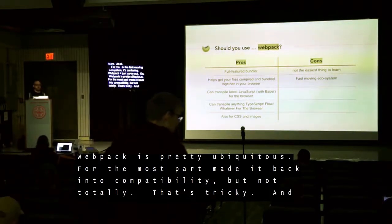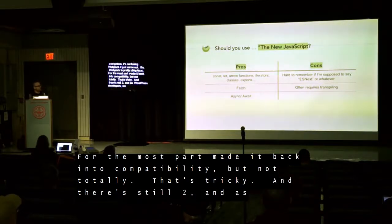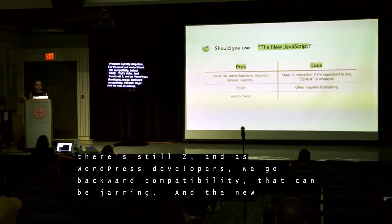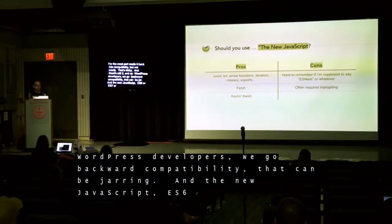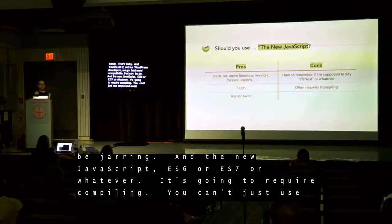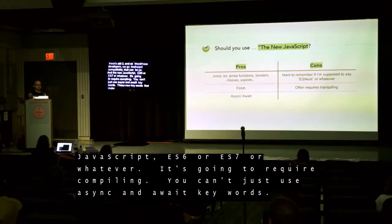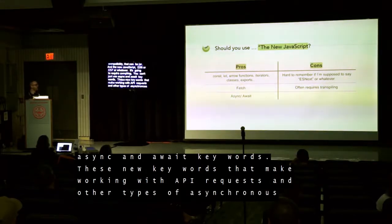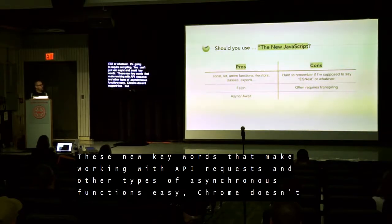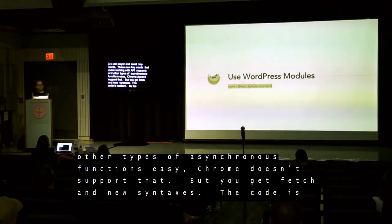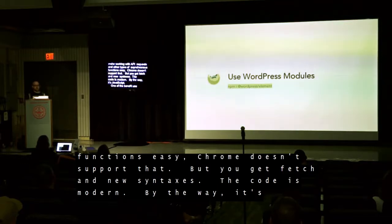The new JavaScript — whether you call it ESNext, ES6, or ES7 — is going to require compiling. You can't just use async and await keywords, which make working with API requests and asynchronous functions easy. Chrome doesn't support that, but you can with Babel. You get fetch and async/await — new syntaxes that are just nice. All my code here is written using the latest modern JavaScript.